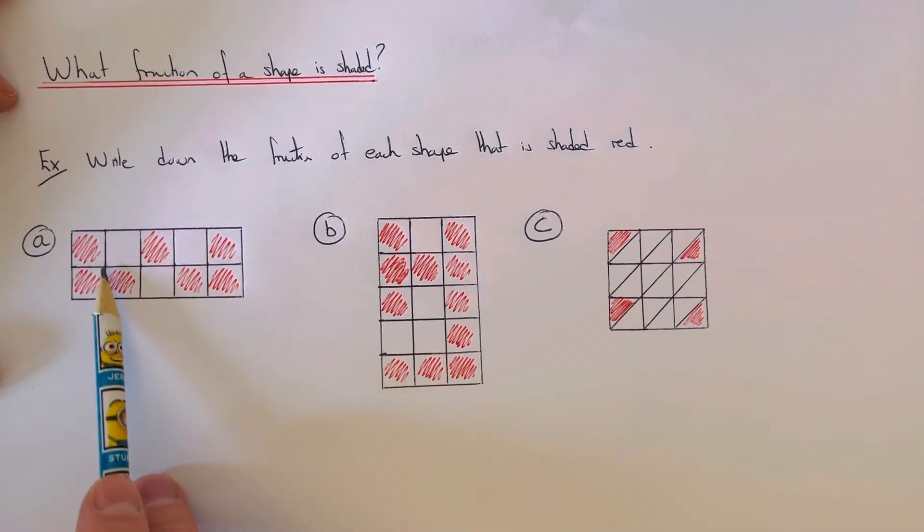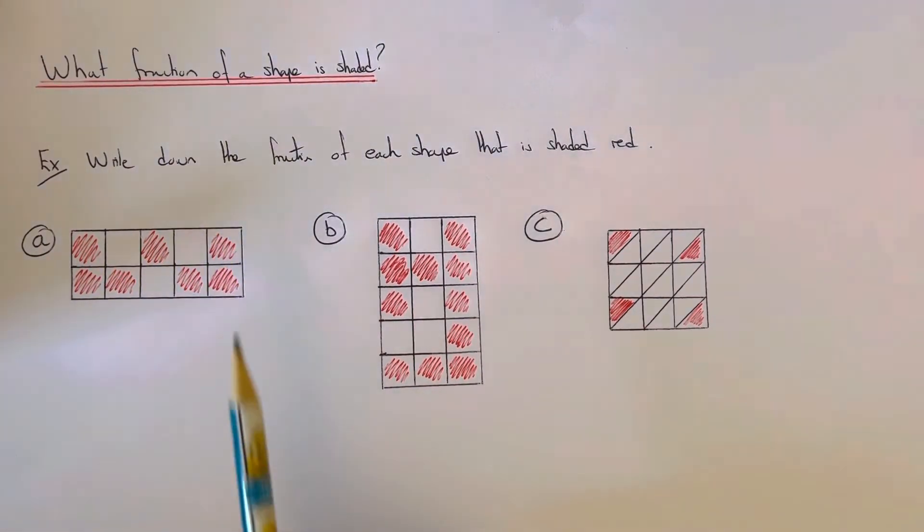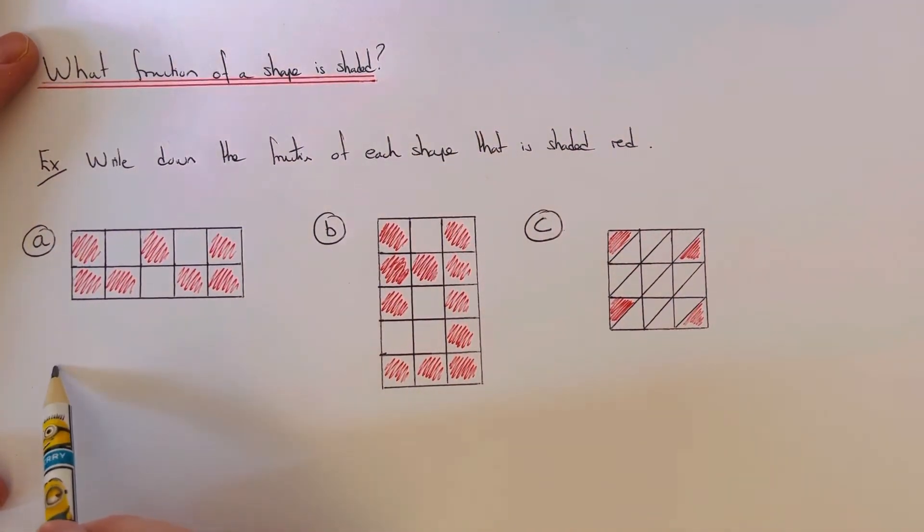Before you do this, just make sure that all the pieces inside the shape are the same size. If you have any bigger squares, you'll need to make them the same size. So to do this, first of all count how many squares are shaded red.